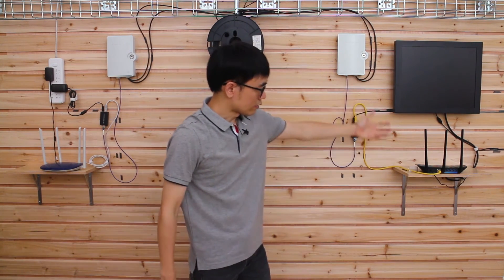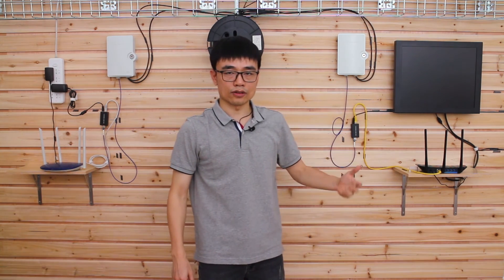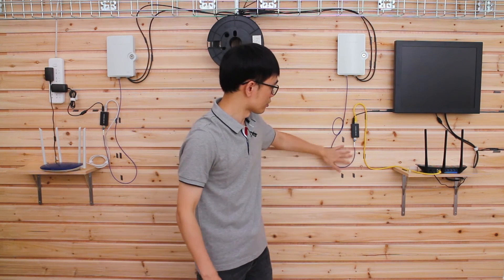You see, the data is going through this Cat5e Ethernet cable and go to the media converter, and it will convert the electric signal to the fiber optic signal and travel through this fiber optic cable to point B.